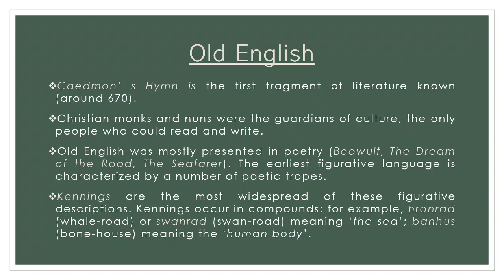Old English poetry is characterized by a number of poetic tropes called kennings, which enable a writer to describe things indirectly and require a reader imaginatively to construct their meaning. Kennings often occur in compounds — for example, Hronrad or 'Whale Road' and 'Swan Road' meaning the sea, and Banhus or 'bonehouse' meaning the human body. Some kennings involved borrowing or inventing words, often chosen to meet the alliterative requirement of a poetic line, and as a result some kennings are difficult to decode, leading to disputes in critical interpretation.